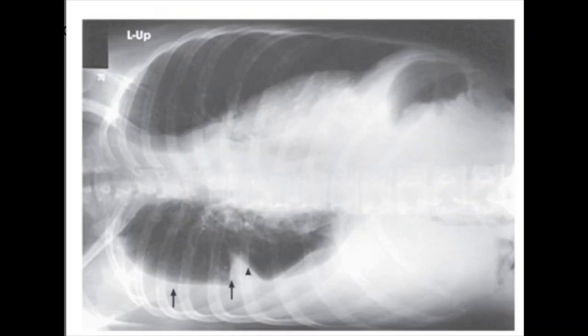In the recumbent right lateral decubitus position, fluid will settle in the dependent right lung, while any free air present will rise and be demonstrated along the lateral wall of the left lung. At least five minutes is required for fluid to accumulate in the dependent portion of the lung, so the patient should be placed in the appropriate decubitus position for a minimum of five minutes before the exposure is made. The arrows on the lateral decubitus chest image denote the fluid level in the right lung. Notice the marker indicating that the left side is up, which is common practice in marking decubitus positions.